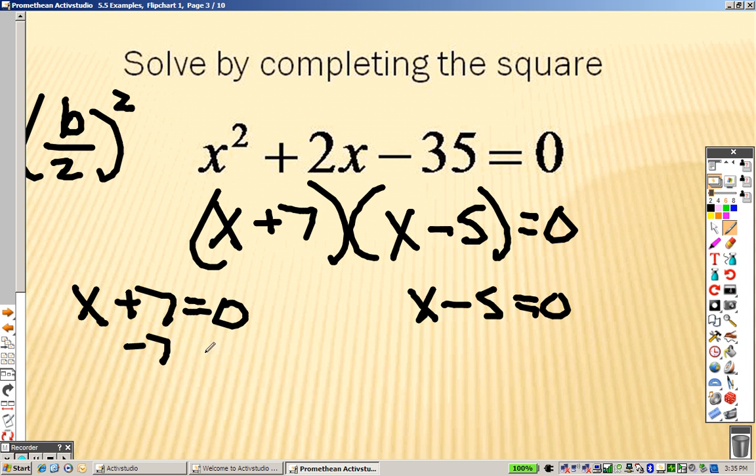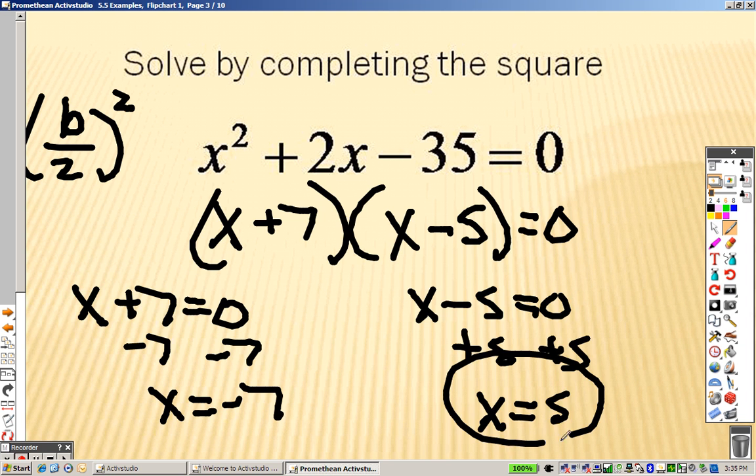Minus 7, you end up getting x equals negative 7. Add 5, you end up getting x equals 5. Okay, great, golden.